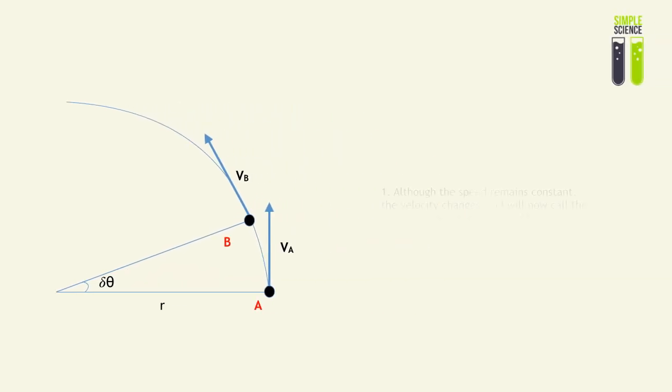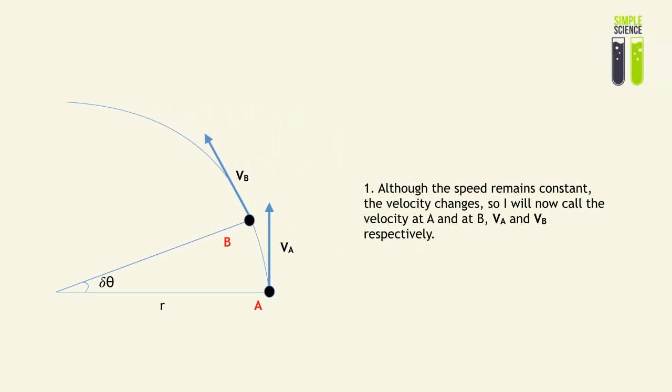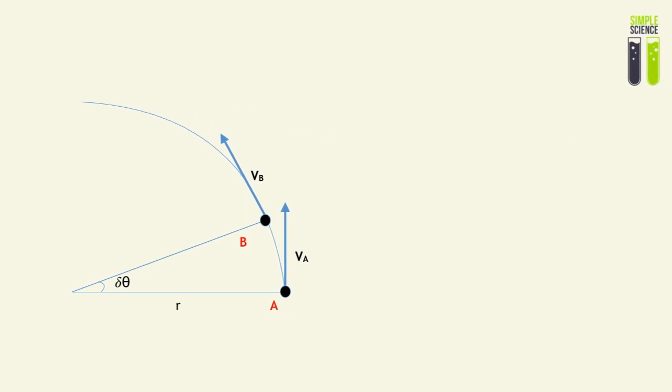We understand that although the speed remains constant, its velocity changes. We should differentiate between the two and that's very important for the algebra that is coming up later. I'm going to call the velocity at position A, VA, and the velocity at position B, VB.